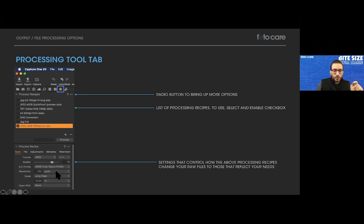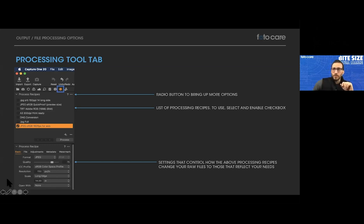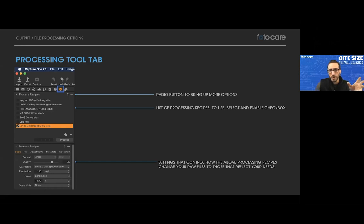You can change resolution and pixels per inch, and scale it using a dropdown that gives options like long edge, short edge, or pick a side. You can also set it to automatically open in Photoshop after processing. If you're processing 100 images at once in a commercial or e-commerce situation, you may want to leave that unchecked. But if you're working by yourself and just want to open one file, it's a useful option.